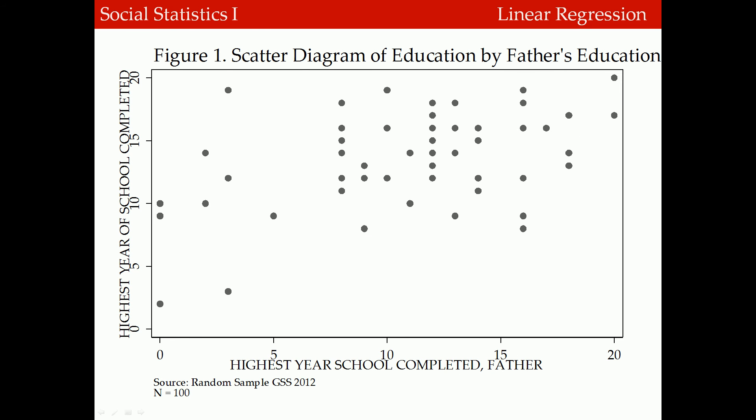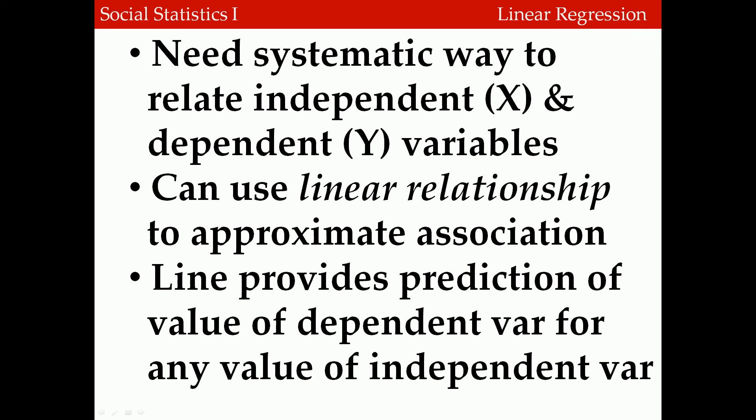This figure shows the scatter diagram relating respondent's education to father's education. On the horizontal x-axis, we have the father's highest degree earned. On the y-axis, we have values of the dependent variable — highest year of school completed for the respondent. Each dot marks the location of these two variables for every given case. We can see a positive relationship: as father's education increases, so does respondent's education.